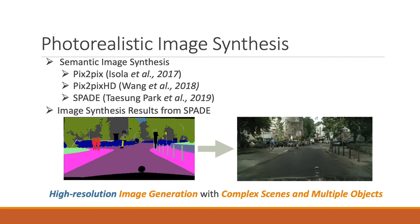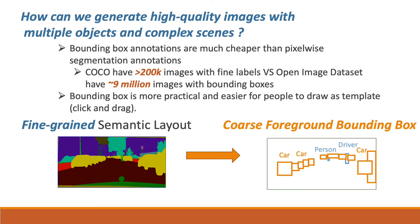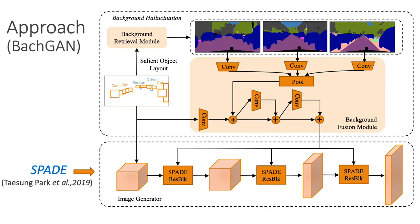In this paper, we study how to generate high-resolution images with coarse foreground bounding boxes. We propose Background Hallucination GAN.